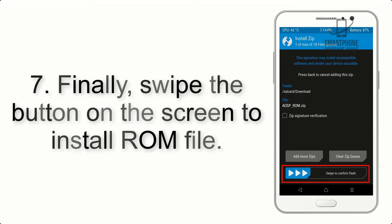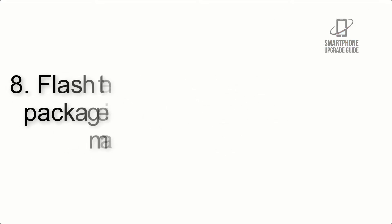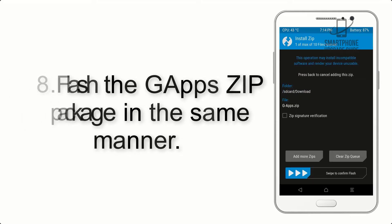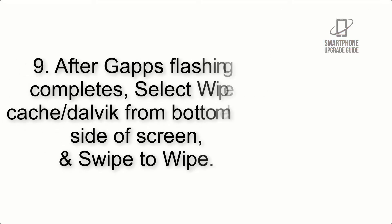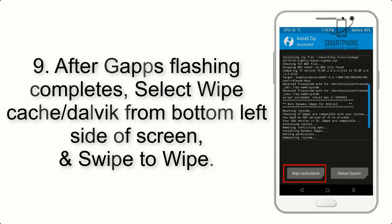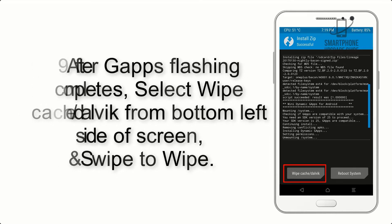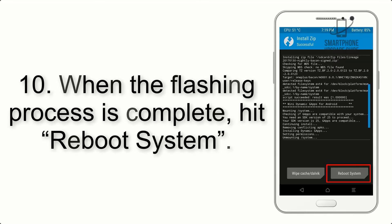Step 7: Swipe the button on the screen to install the ROM file. Step 8: Flash the GApps zip package in the same manner. Step 9: After GApps flashing completes, select Wipe Cache and Dalvik from the bottom left side of the screen and swipe to wipe.